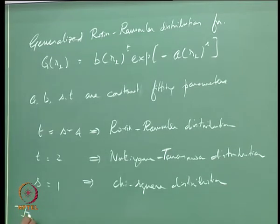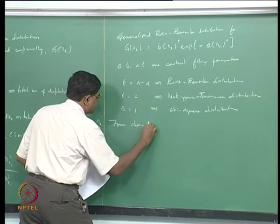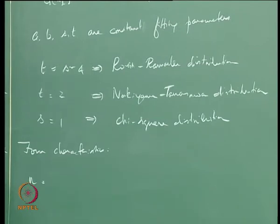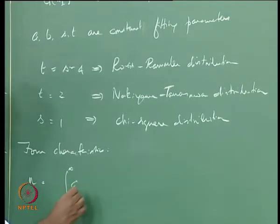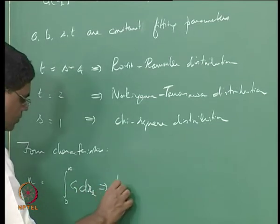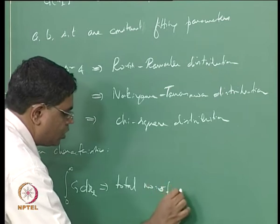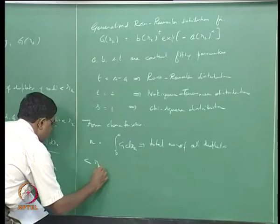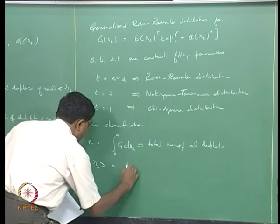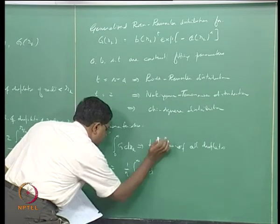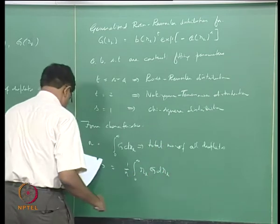The four characteristics we should look for are: first, the total number of droplets N = integral from 0 to infinity of g(R_L) dR_L; second, the arithmetic mean, defined as (1/N) times the integral from 0 to infinity of R_L g(R_L) dR_L, which is the average droplet radius.